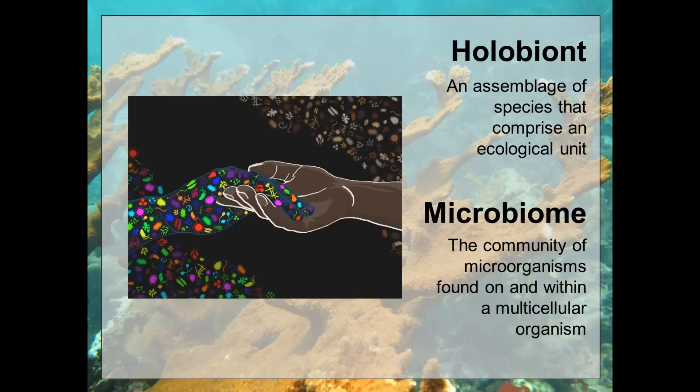I'd first like to start out broadly and introduce the concept of a holobiont. A holobiont is an assemblage of species that comprise an ecological unit — basically a host and all of its symbionts together. Within a holobiont, you have a microbiome, which is simply the community of microorganisms on and within a host. Basically all living things are holobionts — humans are holobionts, as are corals.